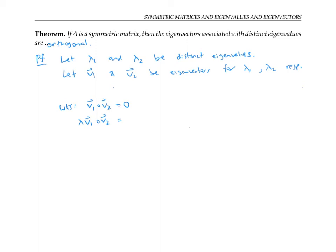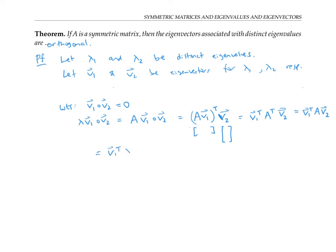That's the same thing as the matrix A times v₁ dotted with v₂, which is the same thing as taking A times v₁, that column vector, transposing it to a row vector, and doing matrix multiplication with v₂. I'll rewrite that transpose as v₁ transpose A transpose v₂. But A transpose is the same thing as A since A is symmetric, and since v₂ is an eigenvector of A with eigenvalue lambda two, that equals v₁ transpose times lambda two times v₂. Pulling out lambda two gives lambda two times v₁ dotted with v₂.